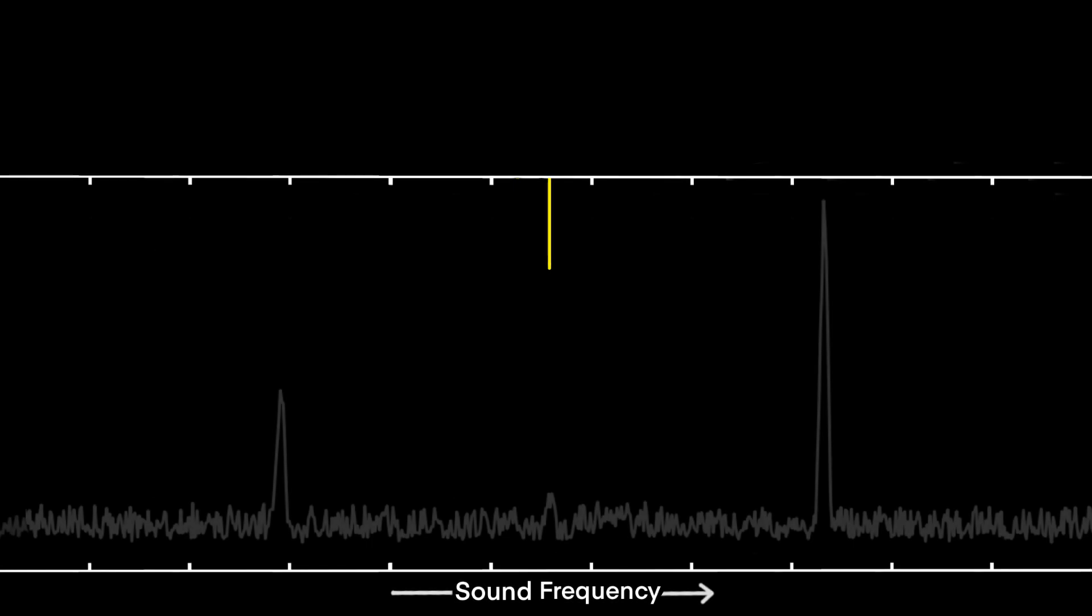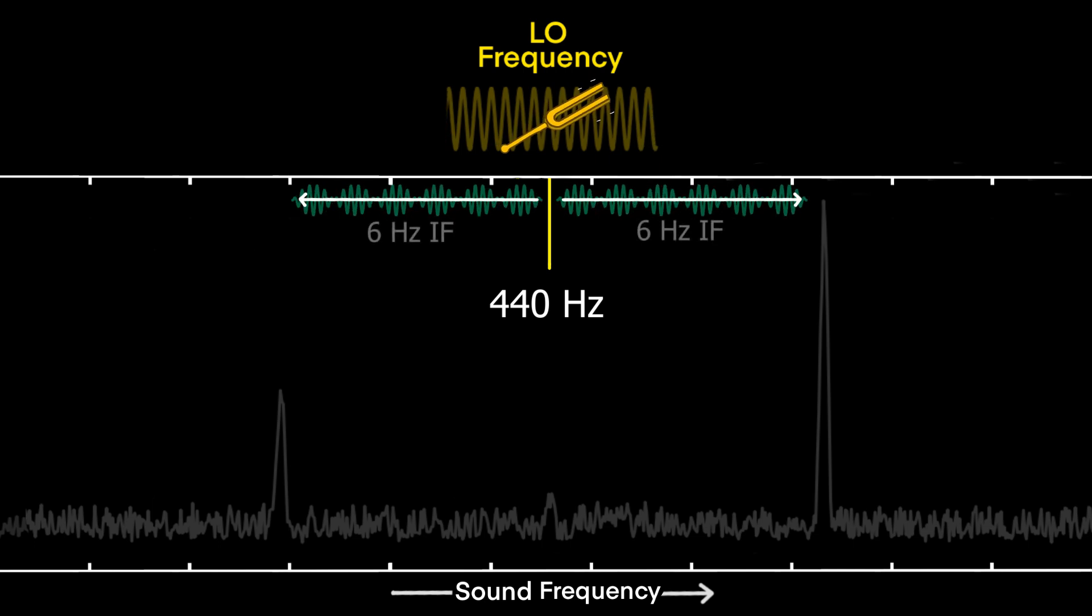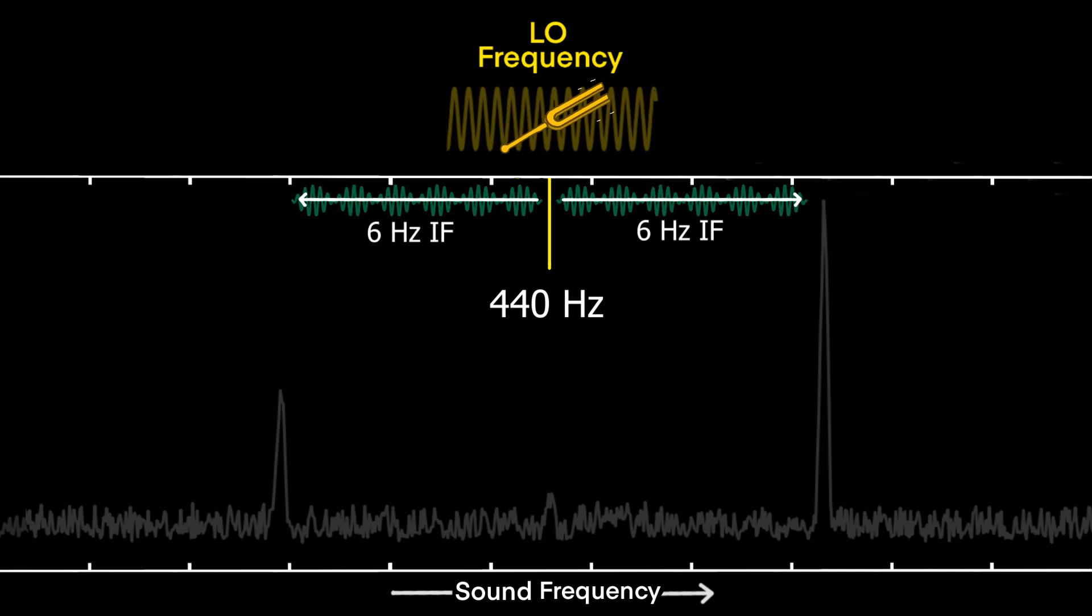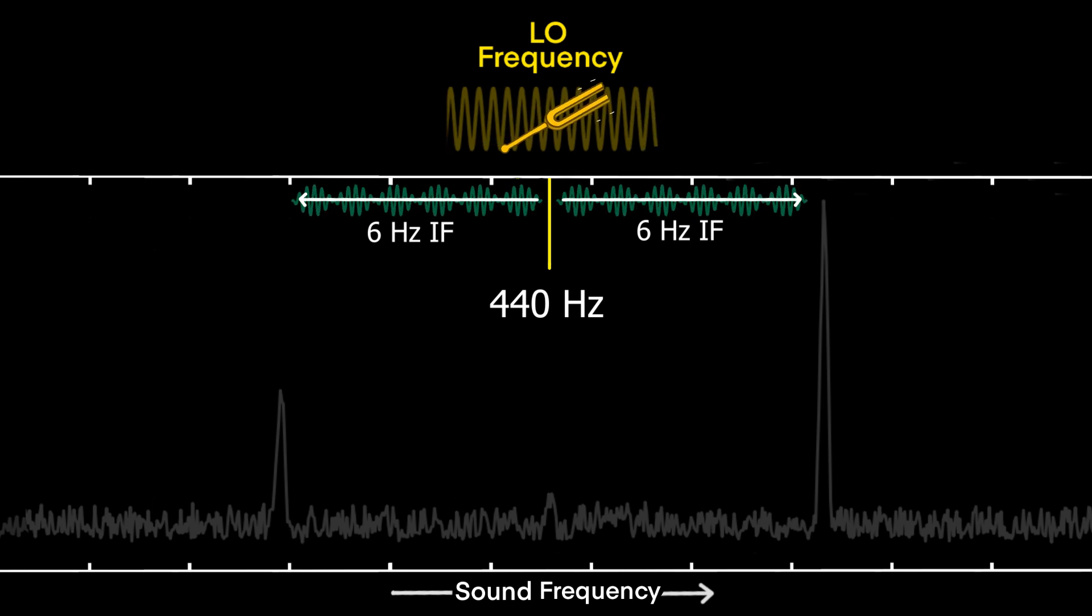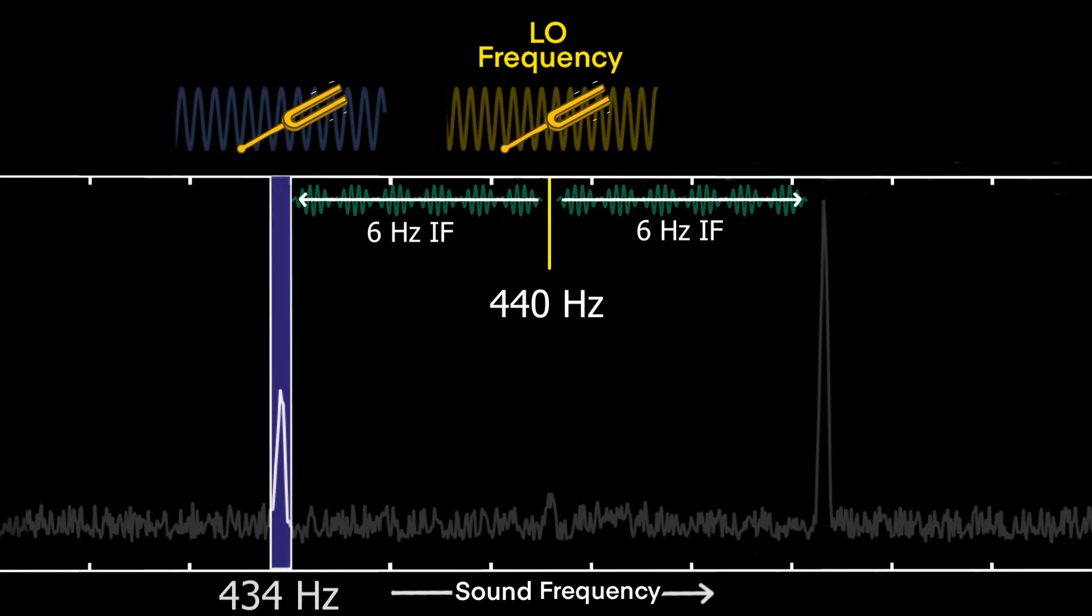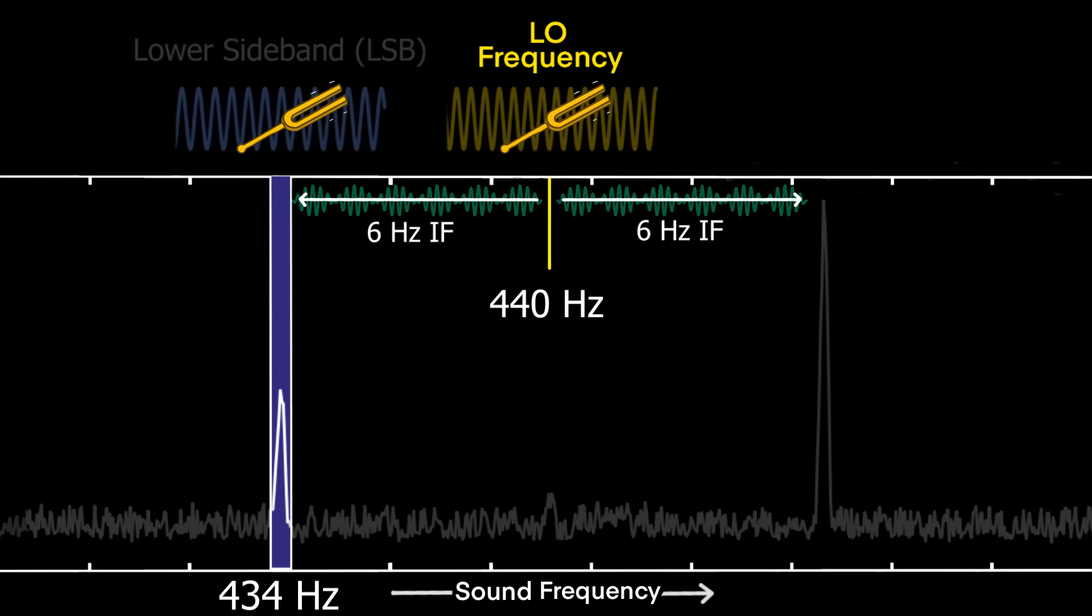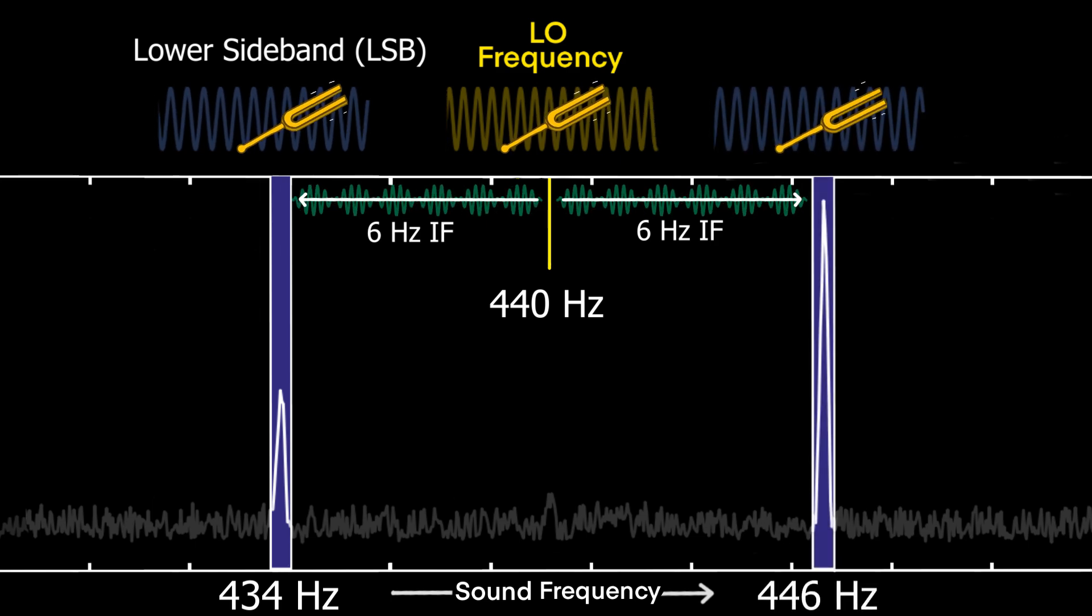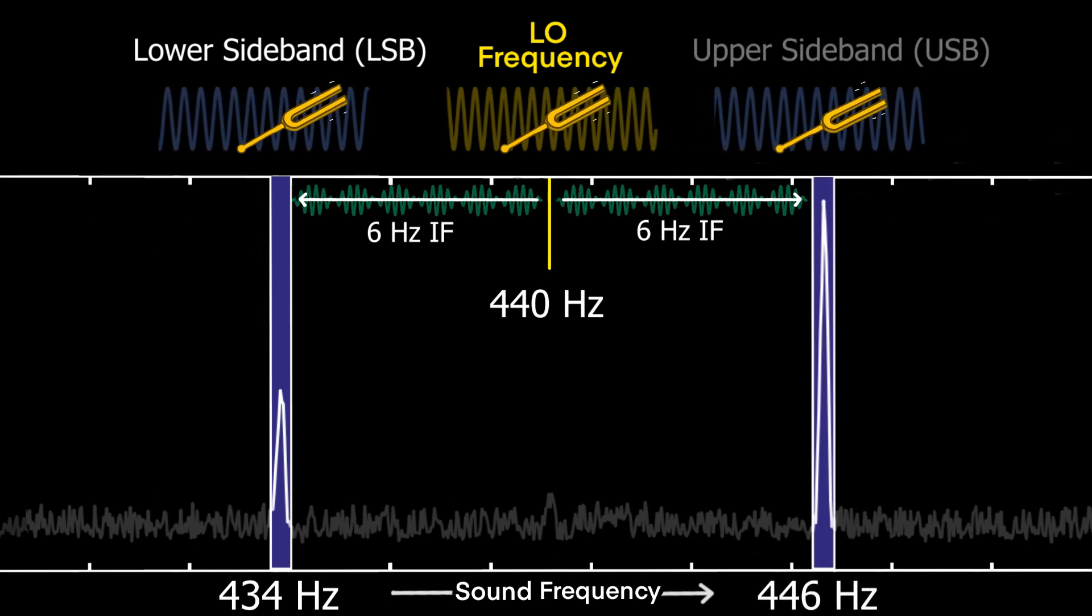Linking this back to our heterodyne receiver, we can think of the 440 hertz sound wave as the frequency of our local oscillator, or LO, and our 6 hertz beating as our intermediate frequency, or IF signal. The IF signal comes from mixing the LO with sound waves 6 hertz below the LO frequency, 434 hertz, which we call the lower sideband, and 6 hertz above the LO, 446 hertz, which we call the upper sideband.